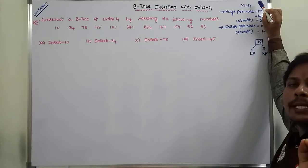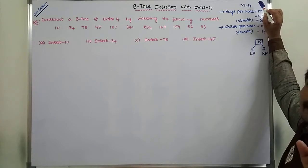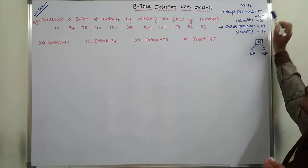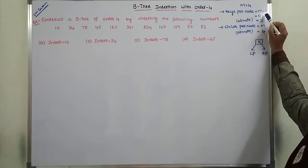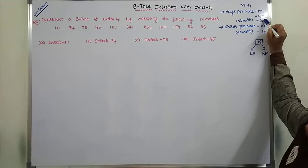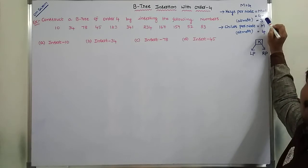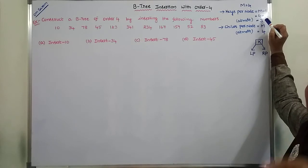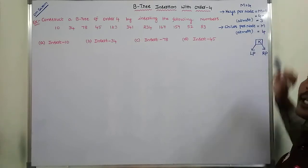Whenever M value is given, the number of key elements per node can be calculated by using M minus 1. That means M value 4, 4 minus 1, that is equal to 3. At most, a node may contain 3 key elements — meaning a node may contain 1, 2, or 3 key elements.